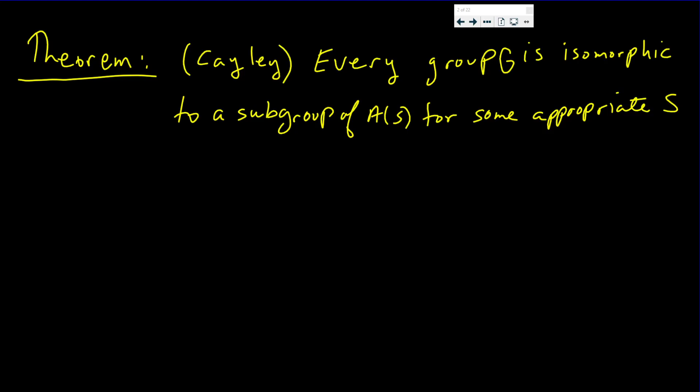In this video we're going to prove an important theorem by Cayley. It states that every group G is isomorphic to a subgroup of A(S) for some appropriate set S. A(S) is all the one-to-one onto mappings from S to S.